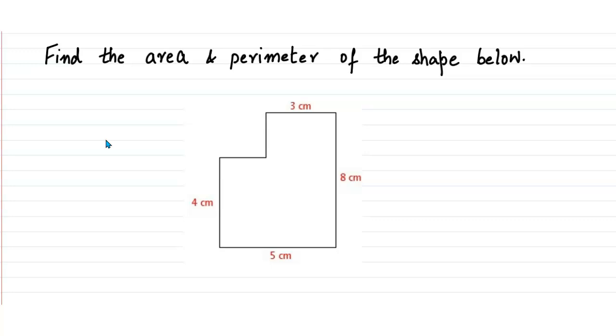The missing sides — first let us see what is given and what is missing. So this side is missing.